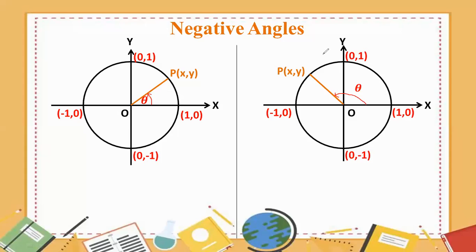Look at that. Okay, now we have negative angles, and now down. So, first quarter, second quarter, first quarter, second quarter. So, first quarter, first quarter, third quarter.